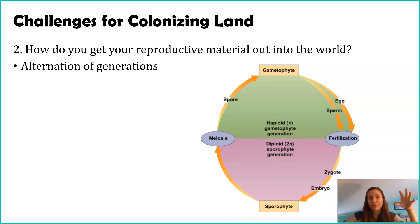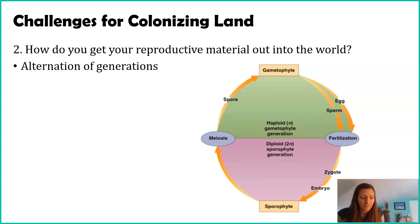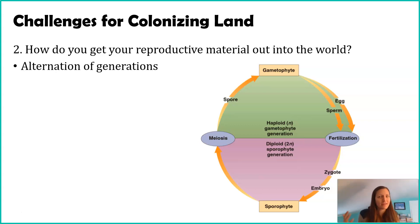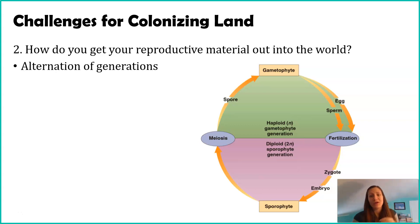A system evolved called the alternation of generations. Essentially, it refers to teetering between a haploid stage and a diploid stage. Think about humans — we are diploid organisms; the only haploid things are our egg and sperm. But in plants, there are some stages that are diploid and some that are haploid. It's kind of like saying when you're a baby you're haploid and as you become an adult you're diploid. Plants are unique in having these two different generations, which we refer to as the alternation of generations.